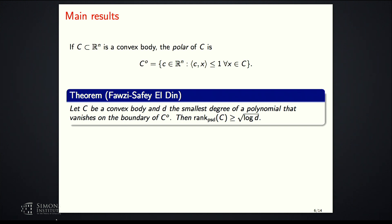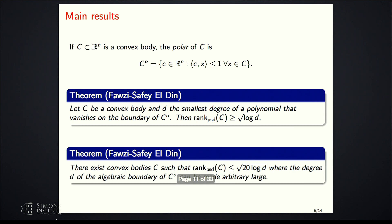Later in the talk, I'll discuss the algebraic boundary of a convex set — the smallest algebraic variety that contains the boundary. We also show that this lower bound is tight: there exist convex bodies such that the PSD rank is at most some constant times the square root of log D, where D can be made arbitrarily large.